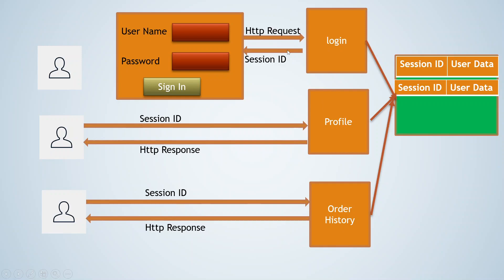Now suppose your application is running on three different nodes. A login request comes to one node, which creates session entries in its cache storage. But the next request goes to a different node — not the one where the session ID was created. That second node cannot access the session details from the first node's cache. The session storage needs to be a common, shared point of contact accessible to all nodes for the session details to work across the entire application.